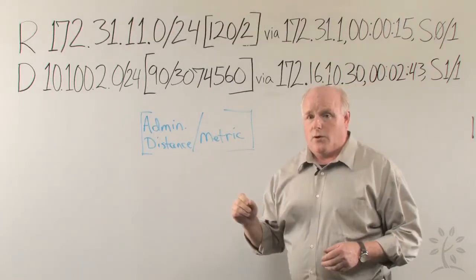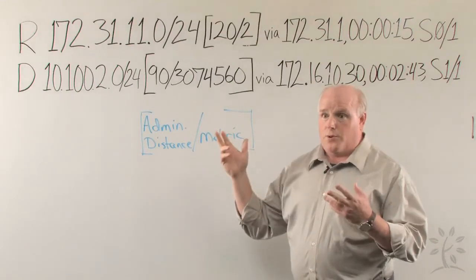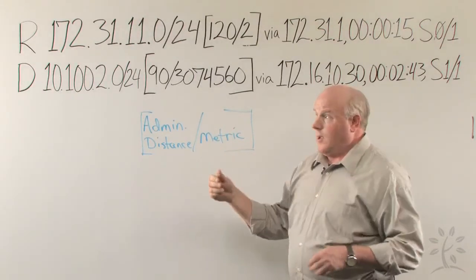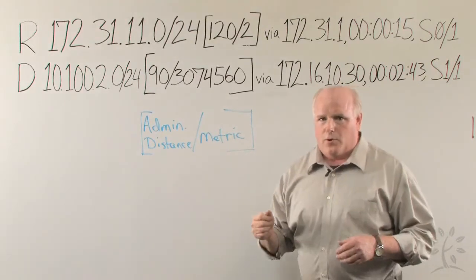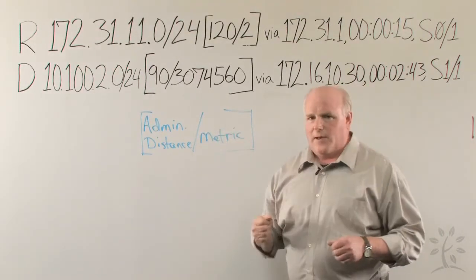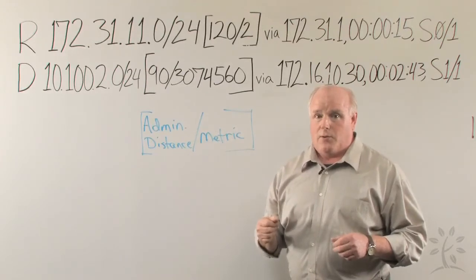First, use the show IP protocols command to take a look at what protocols are running on the router and compare them to what's in the routing table. Then, add a couple of protocols, or take some away, and see if it affects any change when you do the show IP route command.